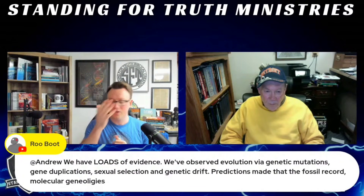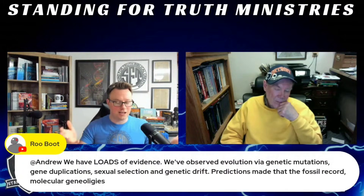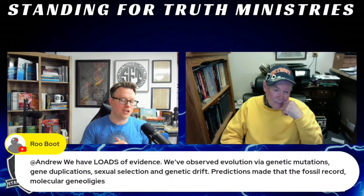He says we have loads of evidence — we've observed evolution via genetic mutations. Well, you started off the show for 30 minutes showing why mutations are not going to help take fish to land-dwelling creatures. They're not going to help explain the necessary vertical changes evolutionists would need. They're largely deleterious, most are nearly neutral, they build up, they degenerate. Gene duplication — okay, fair enough, we haven't talked about that one today, and that is on my list.